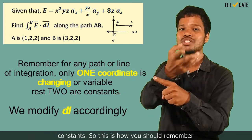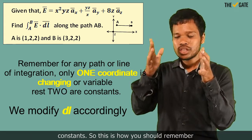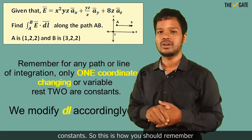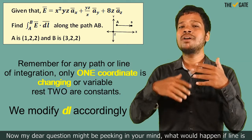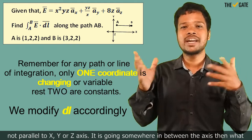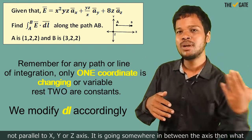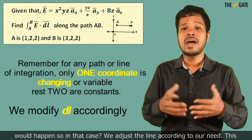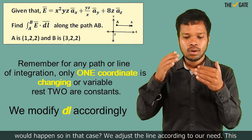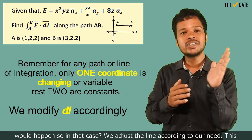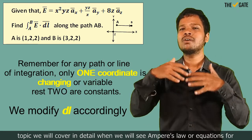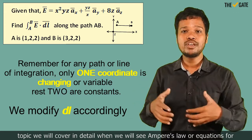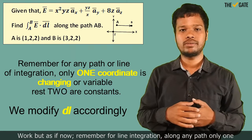Now, a question might be peeking in your mind: what would happen if the line is not parallel to x, y, or z-axis? It is going somewhere in between the axes, then what would happen? So in that case, we adjust the line according to our need. This topic we will cover in detail when we see Ampere's law or equations for work.